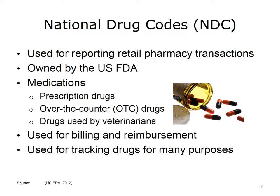The National Drug Codes, called NDC, is a HIPAA standard codeset used for reporting retail pharmacy transactions. The NDC is owned by the U.S. Food and Drug Administration, or FDA, and is distributed by the Department of Health and Human Services. The codeset identifies the ingredients and other characteristics of prescription drugs, over-the-counter (OTC) drugs, and drugs used by veterinarians. One use is to code medications for billing and reimbursement. It is also used to track the use of drugs for public health protection, track adverse drug events, identify drugs for recall, and evaluate the effectiveness of drugs used in natural disasters and terrorist threats.